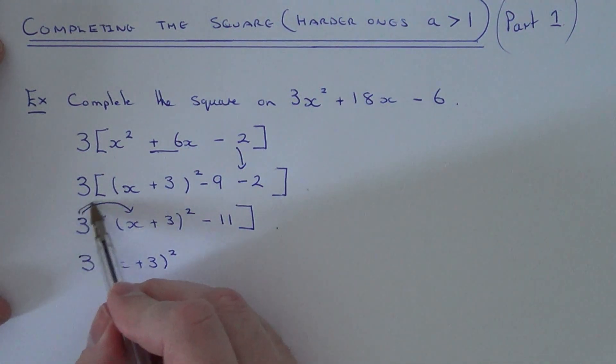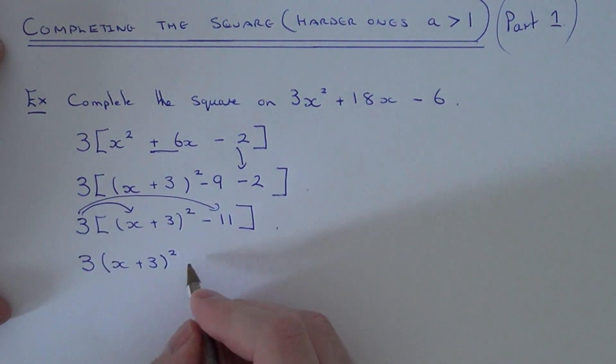And then we multiply the 3 by that minus 11 at the end to give us minus 33.